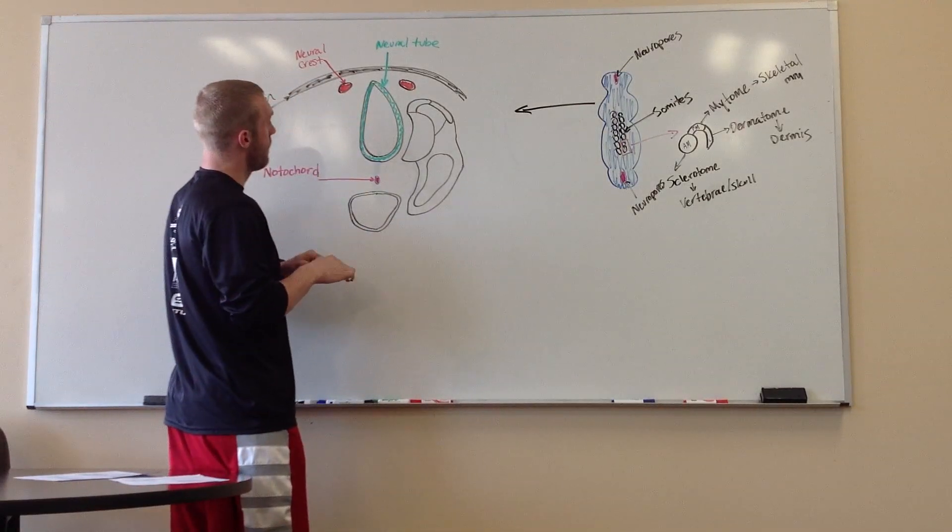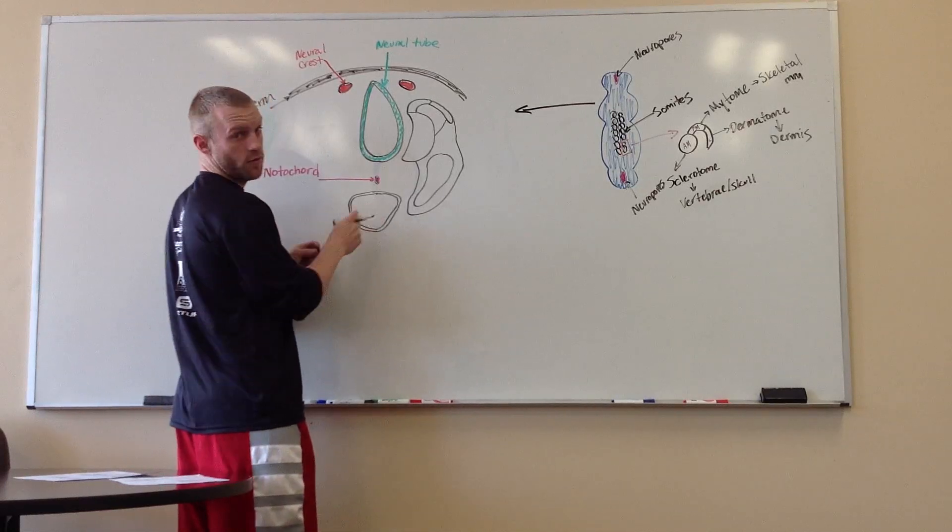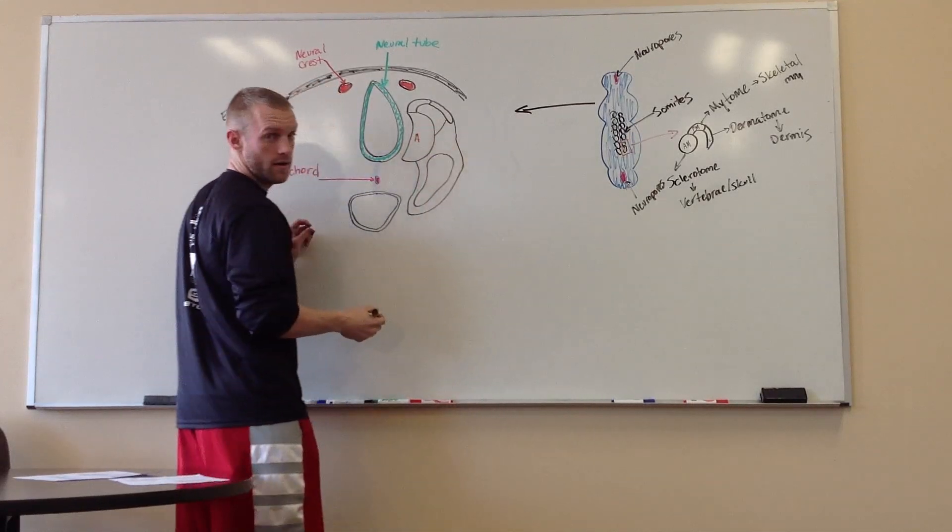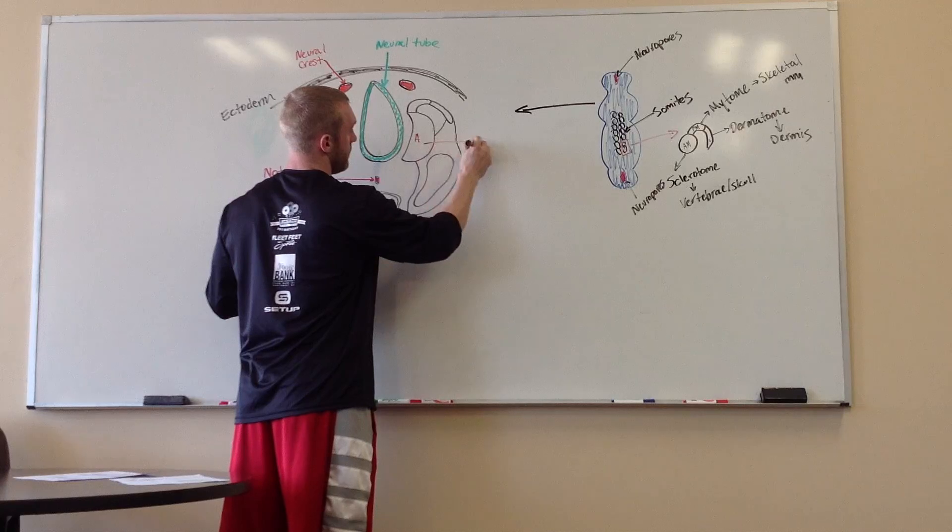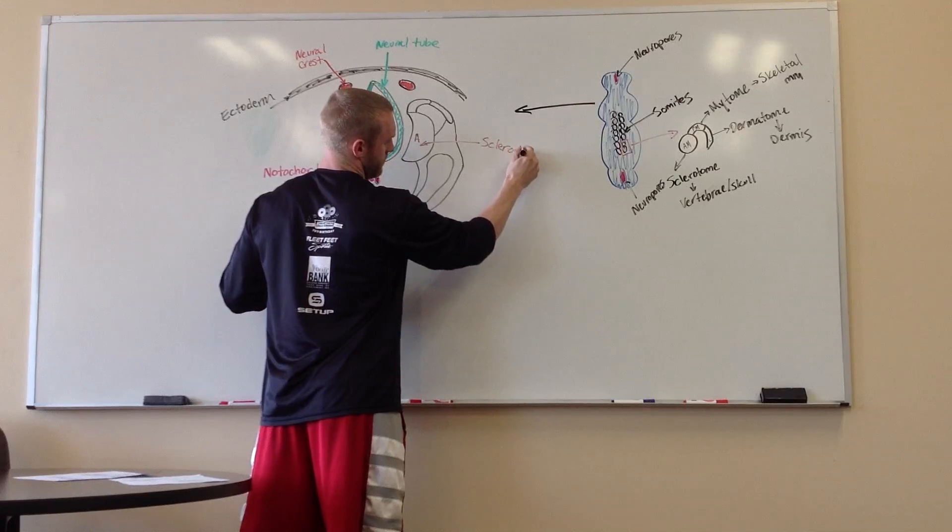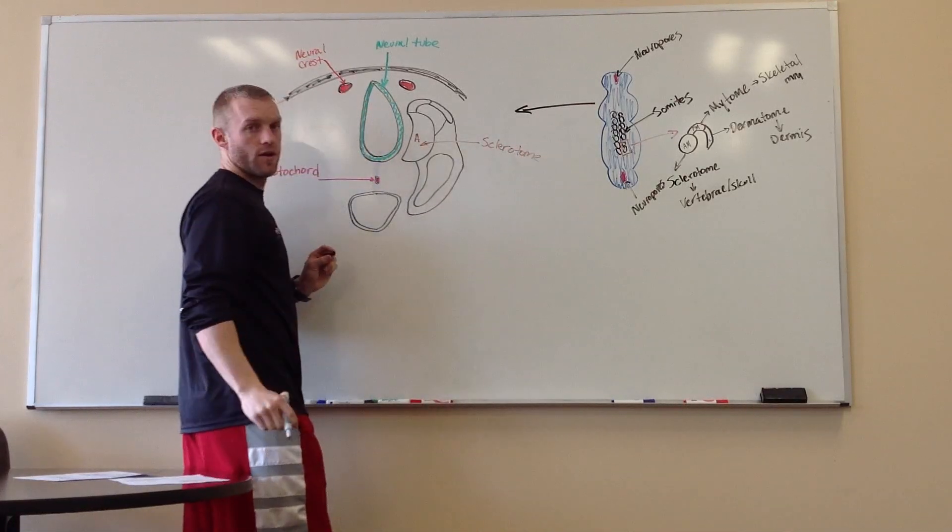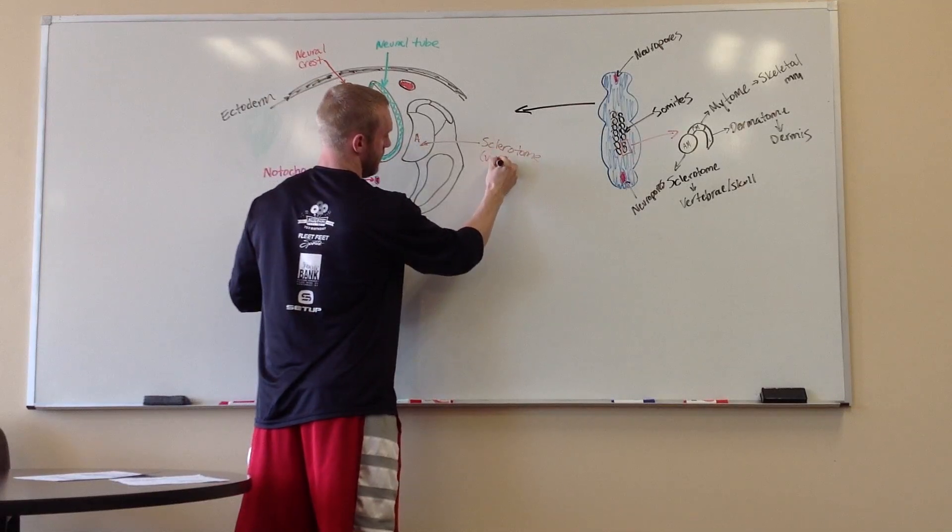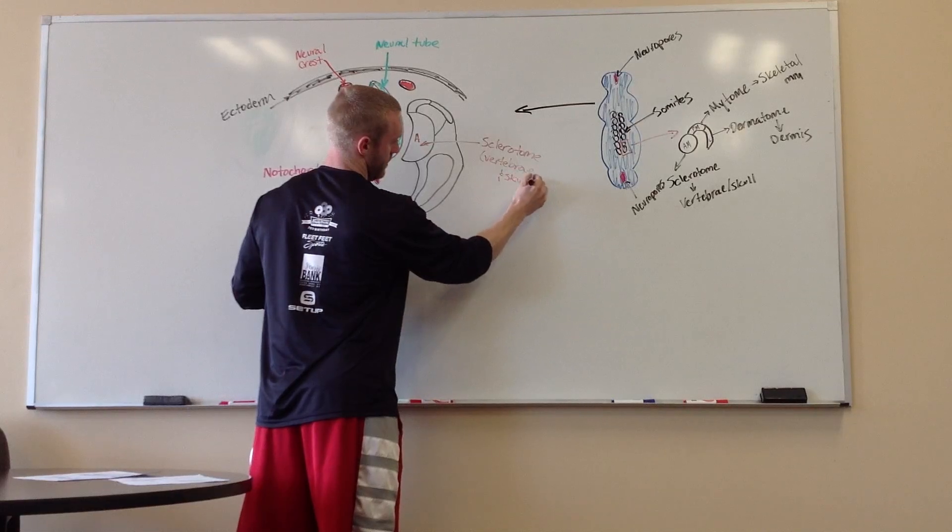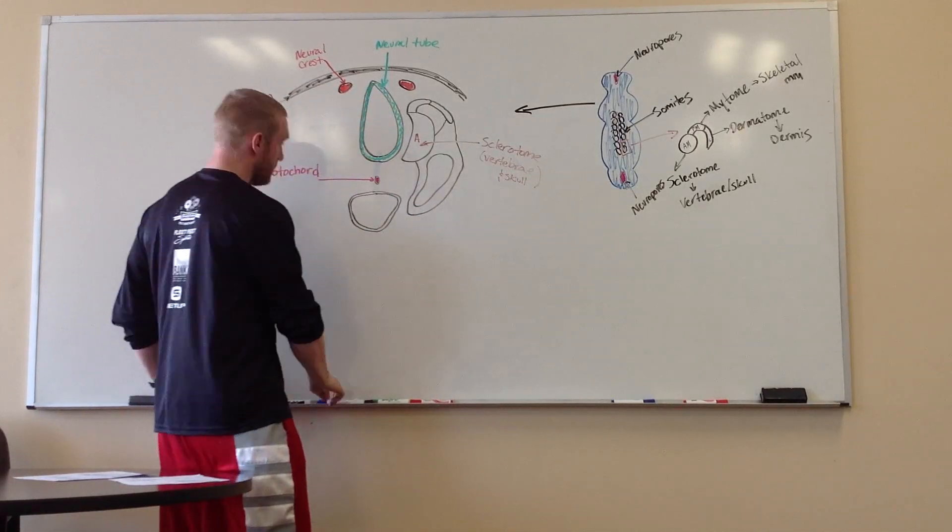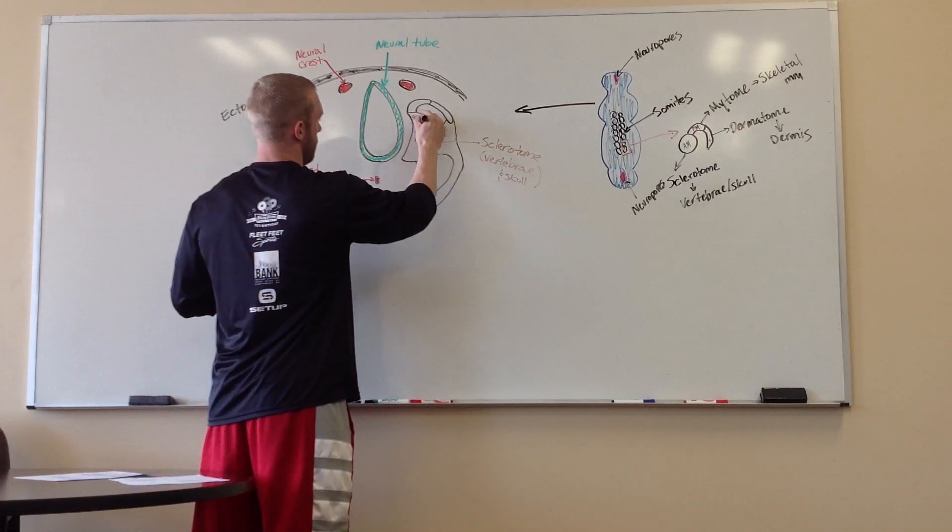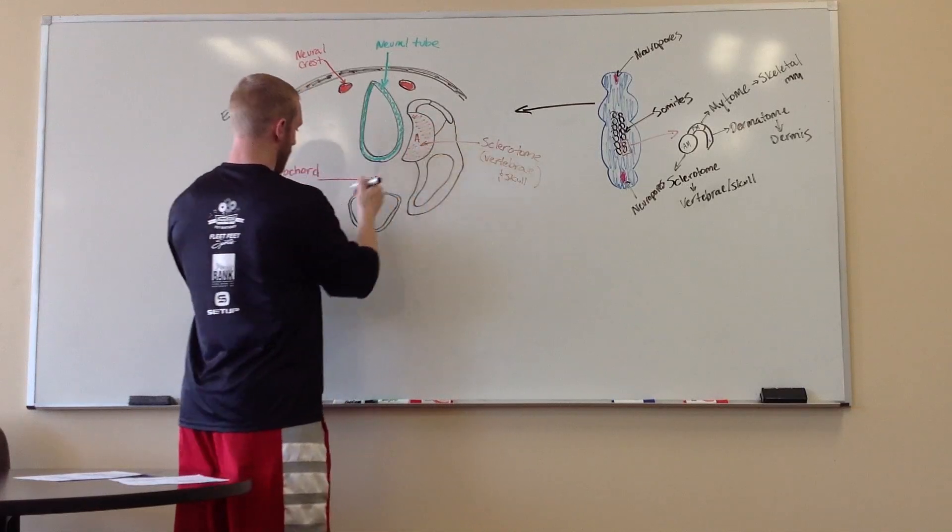And then here is our three parts of our soma. So here is our anterior, which will lead to our vertebrae skull. I'll shade him in for everybody.